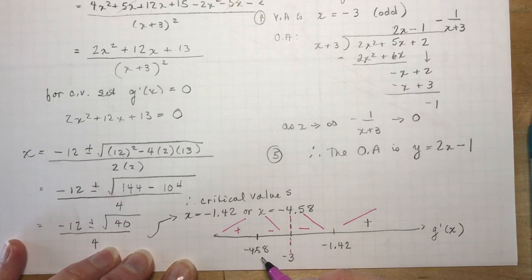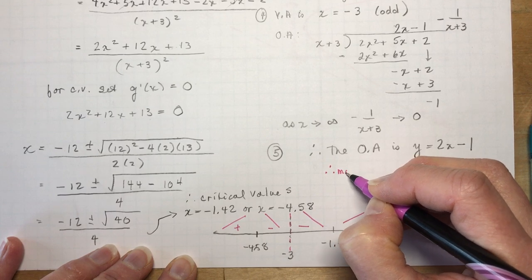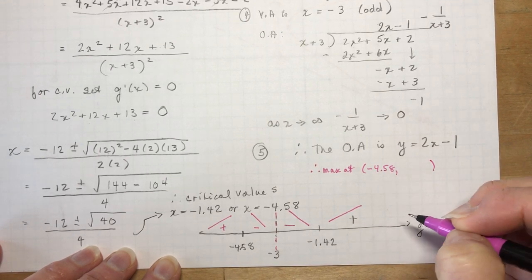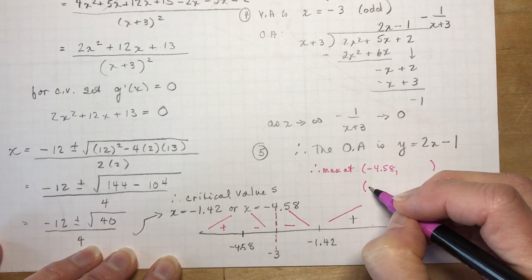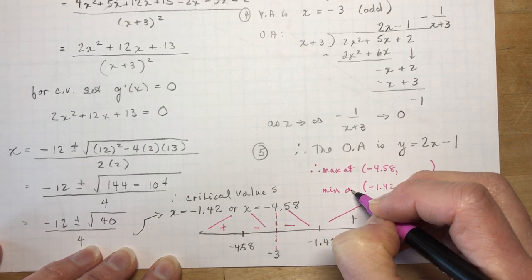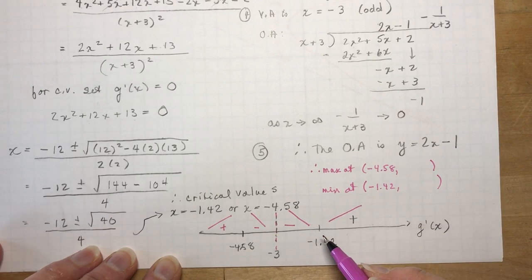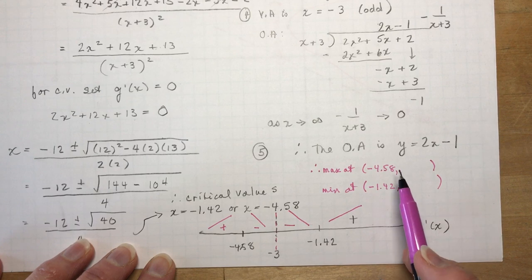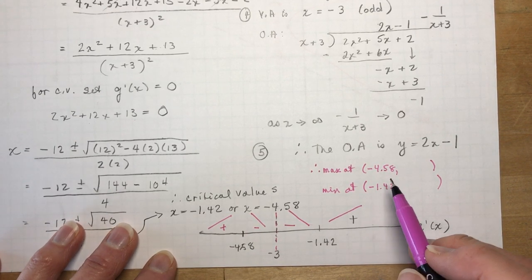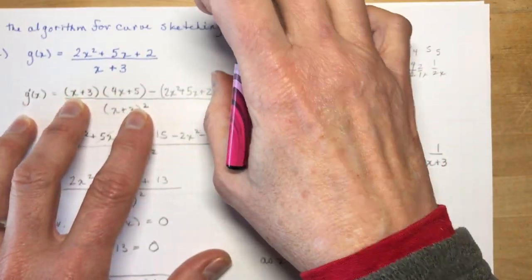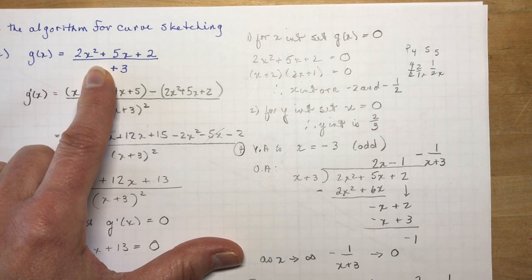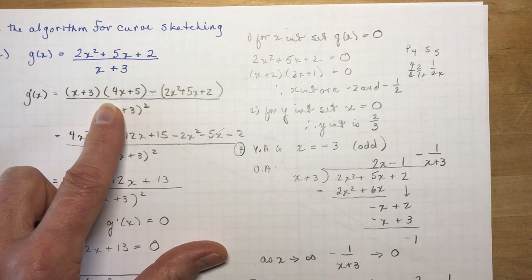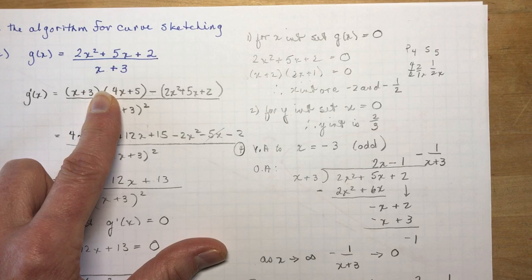So there will be a maximum at x = −4.58 and a minimum at x = −1.42. I need to find the y-coordinates — don't plug into the derivative; you must plug back into the original function g(x). So g(−4.58) ≈ −13.325, and g(−1.42) ≈ −0.675. Remember: plug into the original function, not the derivative.